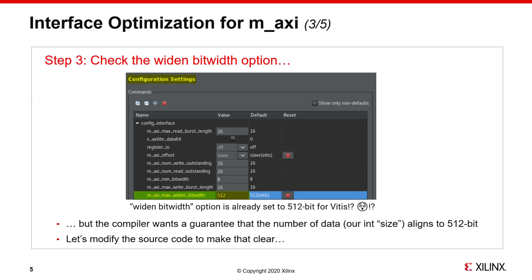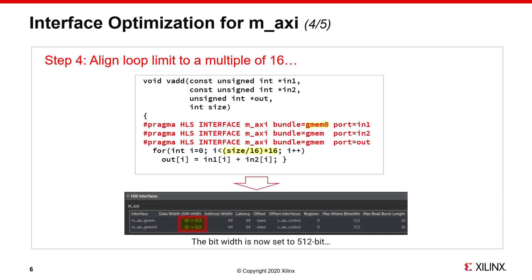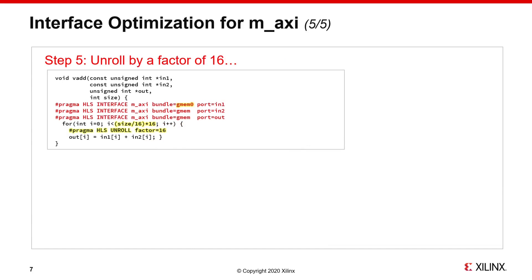So we're going to need to modify the source code to make it clear to the compiler. In this modified version of the code, we implemented a change in the for-loop condition expression. We're using the integer scalar input size divided by 16, and then multiplied by 16. This ensures that our loop aligns to a 16 times 32-bit, which matches a 512-bit boundary. Then our next step is to unroll the loop by a factor of 16, such that every integer on the wider bus is processed at each clock cycle. This, in effect, creates 16 parallel processing lanes that I would loosely call threads.